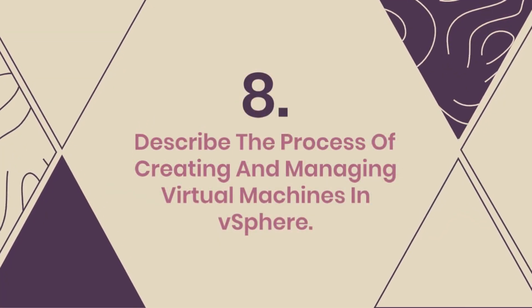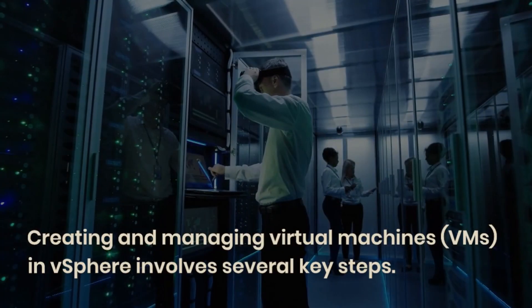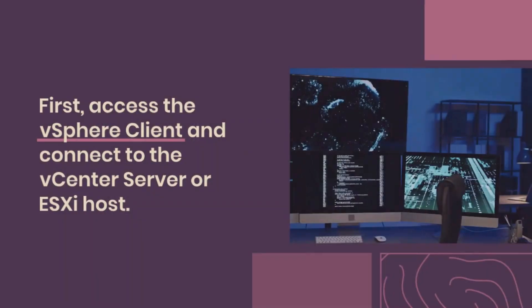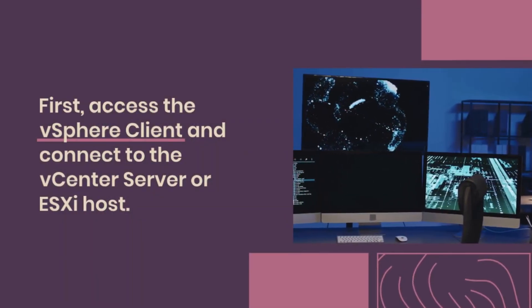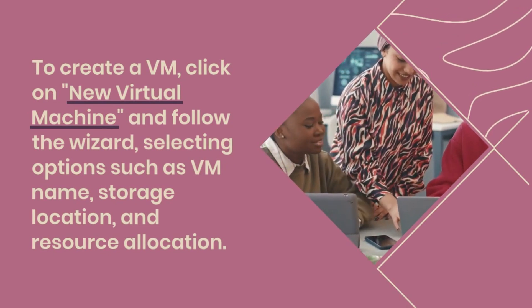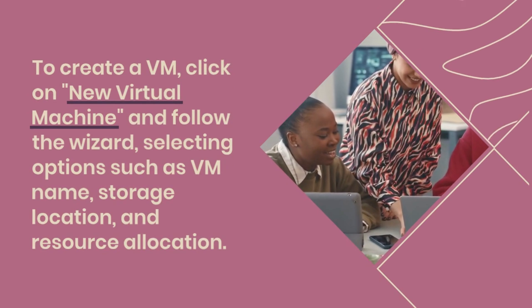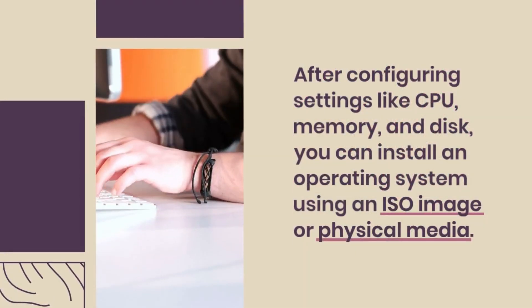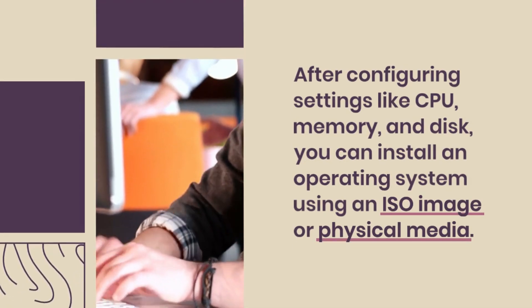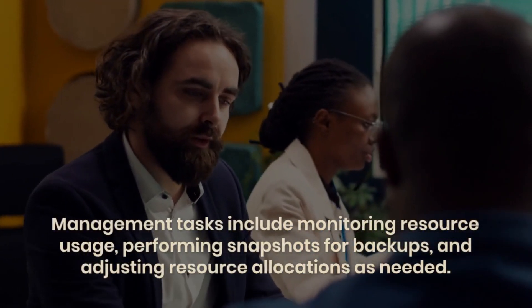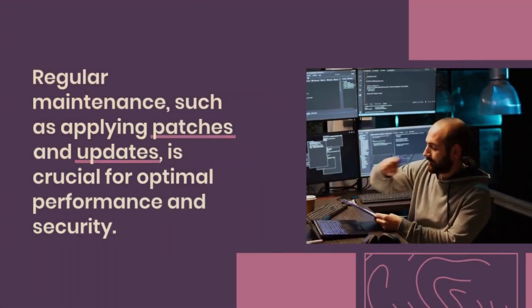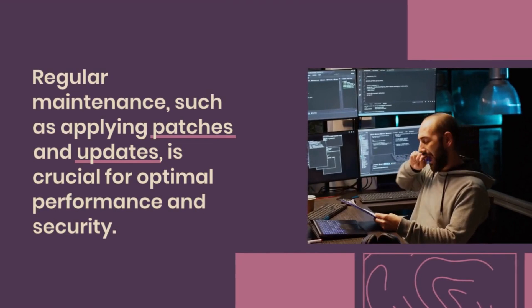Question 8: Describe the process of creating and managing virtual machines in vSphere. Creating and managing virtual machines in vSphere involves several key steps. First, access the vSphere client and connect to the vCenter Server or ESXi host. To create a VM, click on New Virtual Machine and follow the wizard, selecting options such as VM name, storage location, and resource allocation. After configuring settings like CPU, memory, and disk, you can install an operating system using an ISO image or physical media. Management tasks include monitoring resource usage, performing snapshots for backups, and adjusting resource allocations as needed. Regular maintenance, such as applying patches and updates, is crucial for optimal performance and security.